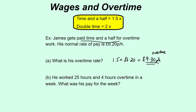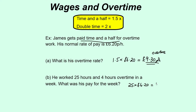So that's what he gets if he does any overtime. He works 25 hours and 4 hours overtime in a week. What was his pay for the week? We're going to look at first of all the 25 hours at basic pay — we've got two different calculations. 25 times his normal rate of £6.20, so 25 times £6.20 gives us £155.